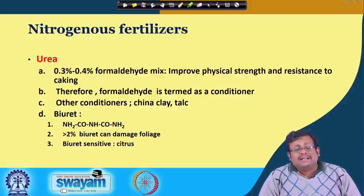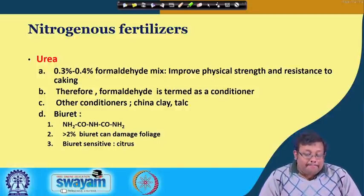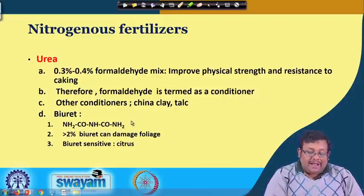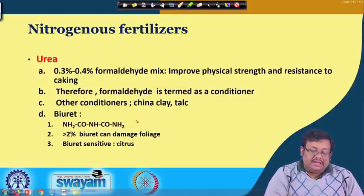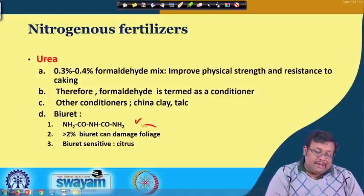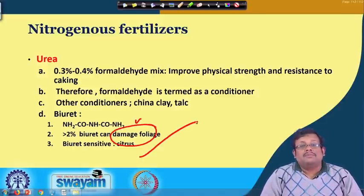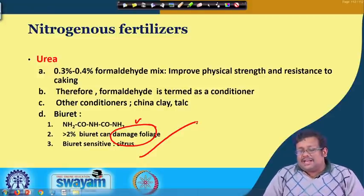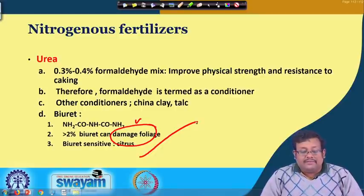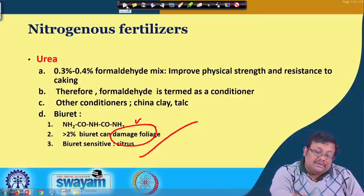Other conditioners include china clay and talc. Urea also contains a chemical called biuret. Biuret is very toxic when present at greater than 2%, and it damages the foliage of biuret-sensitive crops, particularly citrus. The level of biuret must be monitored carefully during urea fertilizer production.